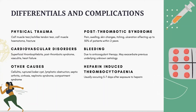Moving on to differentials — it's important to note that roughly a third of patients suspected to have DVT actually have DVT. Differentials fall into three categories: physical trauma such as calf muscle tear, Achilles tendon tear, calf muscle hematoma, or fracture; cardiovascular disorders such as superficial thrombophlebitis, post-thrombotic syndrome, vasculitis, or heart failure; and other causes including cellulitis — a really important differential — ruptured Baker's cyst, lymphatic obstruction, septic arthritis, cirrhosis, nephrotic syndrome, and compartment syndrome.